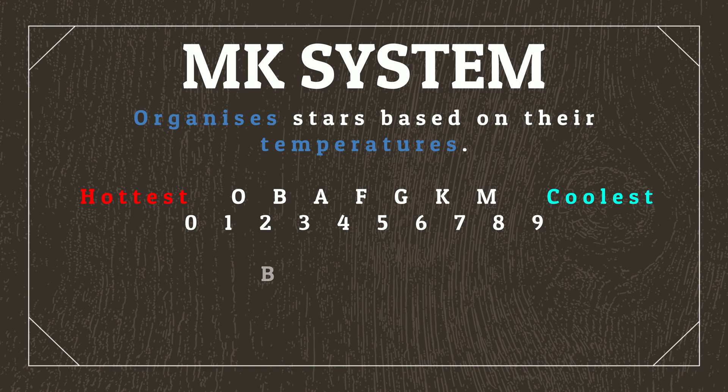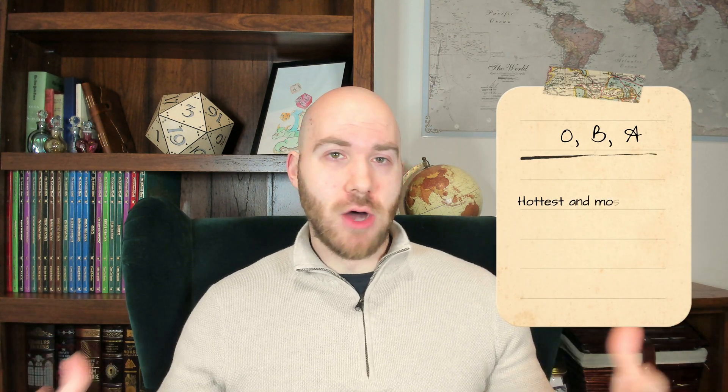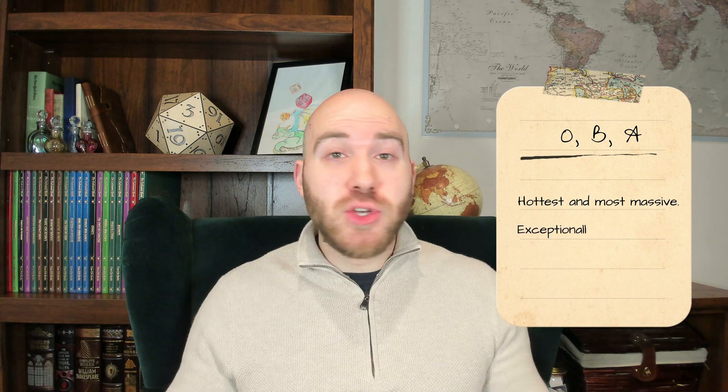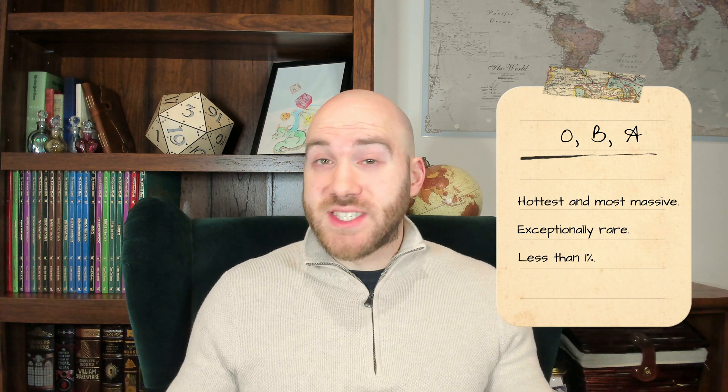For example, B8, B9, A0, and A1 are sequentially listed from hottest to coolest. We can immediately rule out O, B, and A class stars, which are the hottest and most massive. These three classes are also exceptionally rare within the universe, making up a combined total of less than 1% of all stars, due to requiring so much matter to form and living very short lifespans because they're so massive.